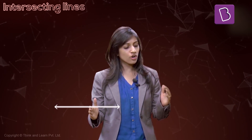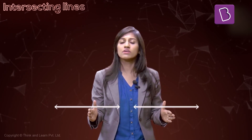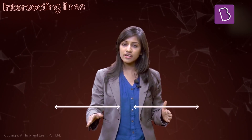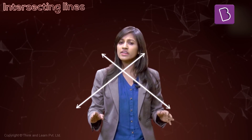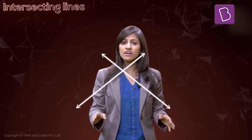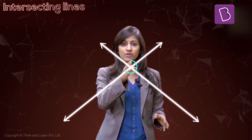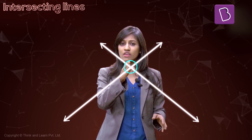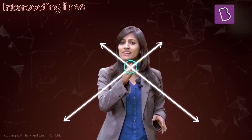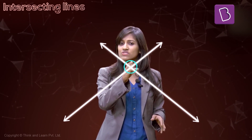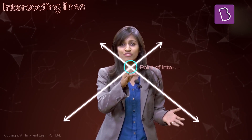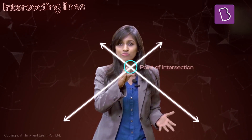I have a line over here, and to give it company I got another line over here. This guy decided to go this way, this guy decided to go this way, and then they intersected over here. Because of that they're called intersecting lines, and the place where they intersected is called the point of intersection.